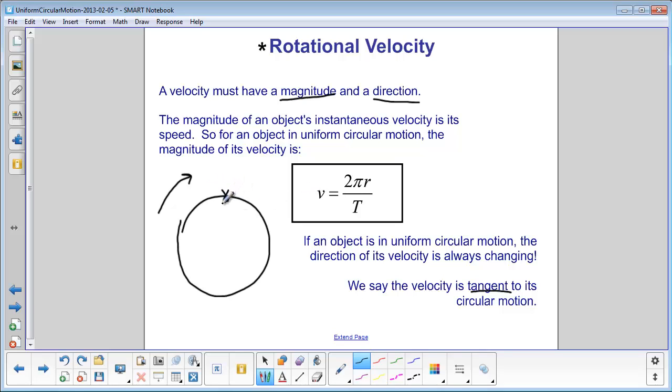if there's an object at the top of this path, the velocity would be towards the right. If it was here at the right, the velocity would be towards the bottom.